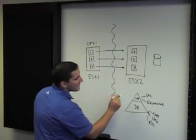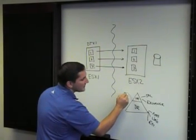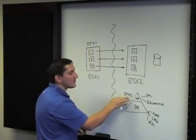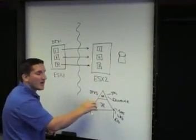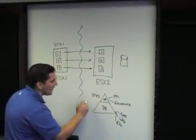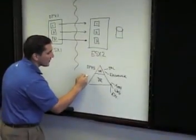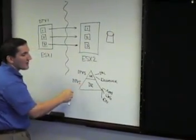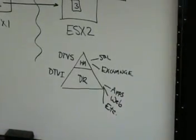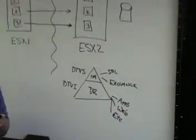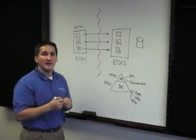And that's really how I would position the difference between the two products. So Double Take for Virtual Systems is really aimed at that upper tier SQL Exchange high availability workload, and the Double Take for VMware Infrastructure product is really aimed more at disaster recovery of these second tier applications. And so that's an overview of what Double Take for VMware Infrastructure does, how it works, what some of the benefits are.